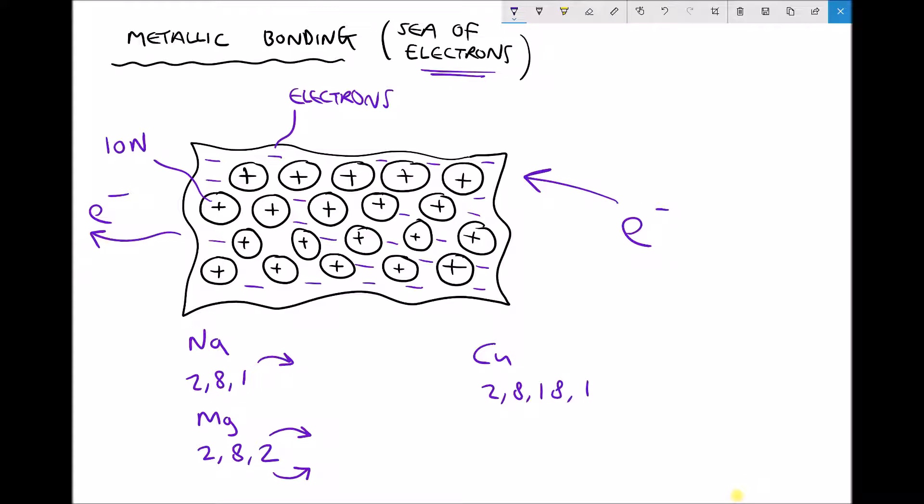We talked about how transition metals backfill the previous shell rather than filling the outer shell. But what this means is these backfilled electrons, in this case we've got 10 additional electrons in that shell, these backfilled electrons have a very similar energy level as what we call the valence electron in the outside shell.